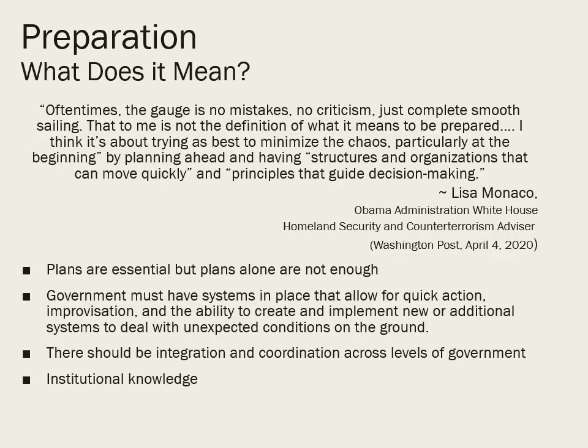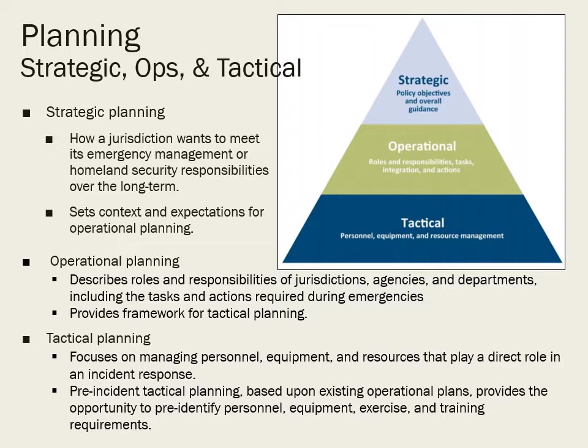That lack of capacity has been blindingly obvious in our federal government's lack of a coordinated, cohesive response to the COVID-19 pandemic. There are three tiers of planning. Strategic planning at the top addresses how a jurisdiction wants to meet its emergency management or homeland security responsibilities long-term, setting context and expectations for operational planning. Operational planning gets into roles, responsibilities, and more specific actions, providing a framework for tactical planning.